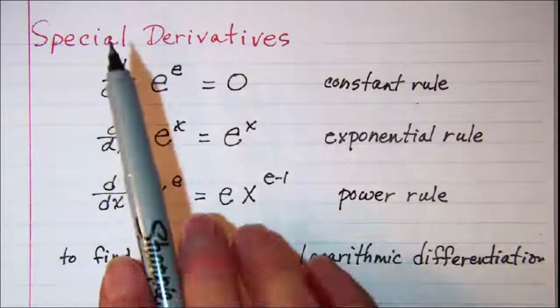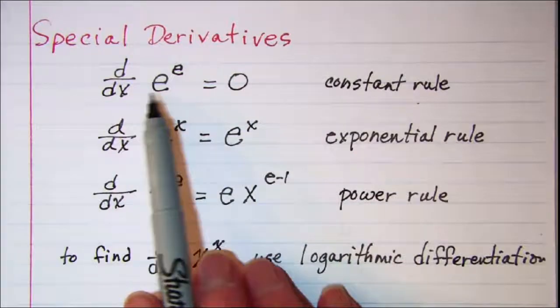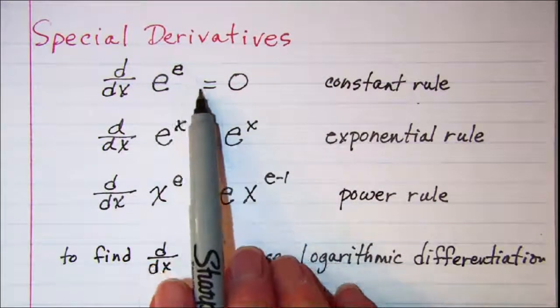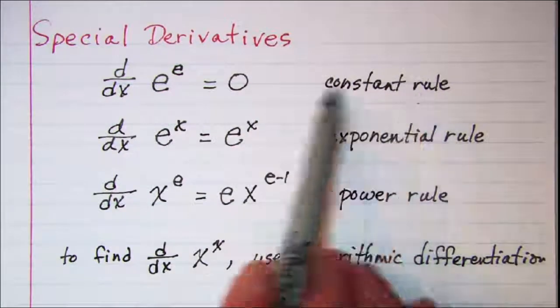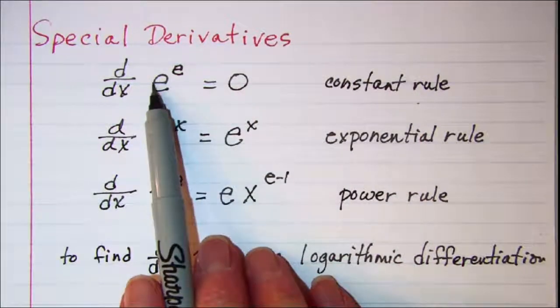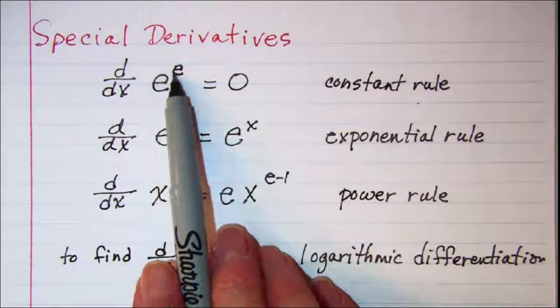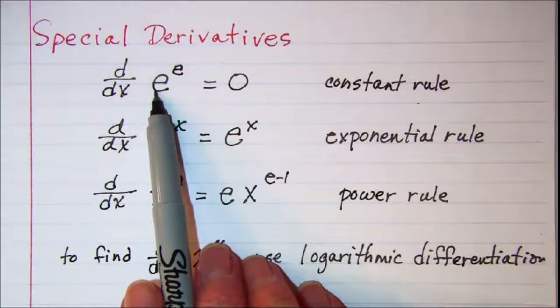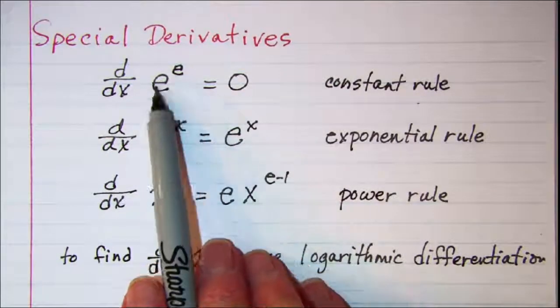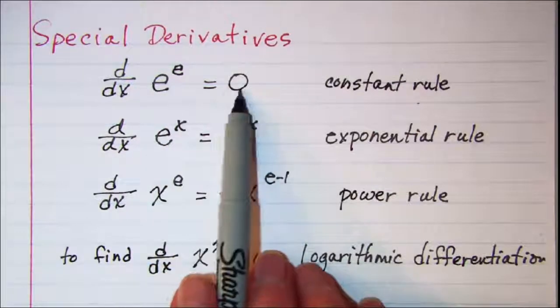In this video we'll be looking at some special derivatives. First, the derivative of e to the e is equal to zero, and basically we use the constant rule because we know that e is approximately 2.71828, and that's raised to 2.71828. So you have a constant raised to a constant, so the derivative of e to the e is equal to zero.